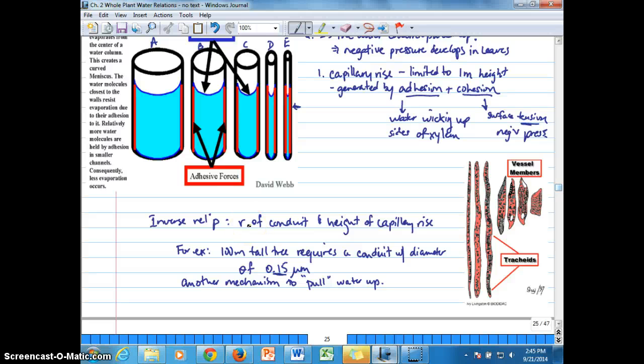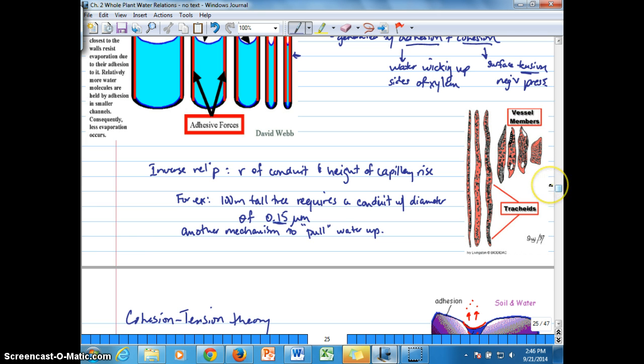Capillary rise accounts for water movement up to one meter in height in xylem. Root pressure accounts for more upward movement of water, positive pressure from the roots, but is limited to nighttime, after which negative pressures take over and override those positive pressures from the root. So what is it that accounts for that movement above capillary rise during the day?